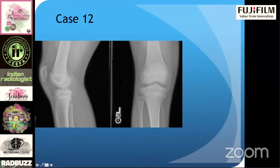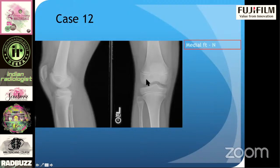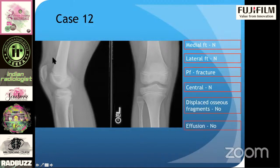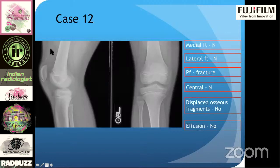Next case — 10 seconds. This is not a very obvious finding. First, you can see this is an immature skeleton with visible physes. Taking the compartment approach: medial is normal, lateral is normal. At the patellofemoral compartment, you can see a slender fracture at the inferior pole of the patella. Everything else is normal, no displaced osseous fragment, and this fragment is not displaced. Not much of an effusion. This is a patellar sleeve avulsion fracture.